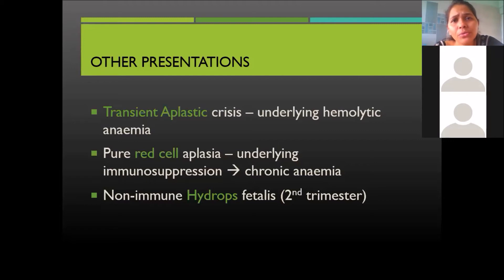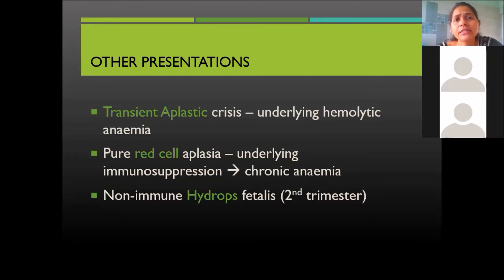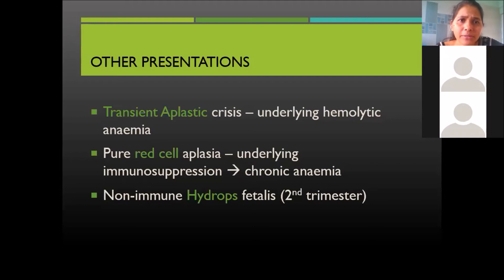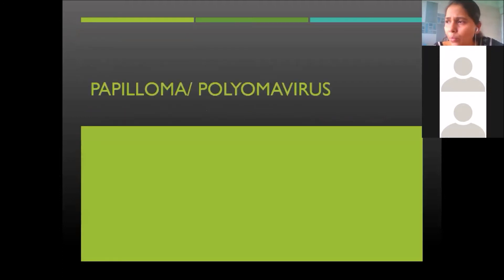Transplacental transmission of Parvovirus leads to non-immune hydrops fetalis, with the highest risk in the second trimester. To summarize: slapped cheek appearance in erythema infectiosum in babies; symmetrical arthropathy in adults; RBC-related complications like transient aplastic anemia and chronic anemia from pure red cell aplasia; and non-immune hydrops fetalis — unlike the immune type involving Rh incompatibility.